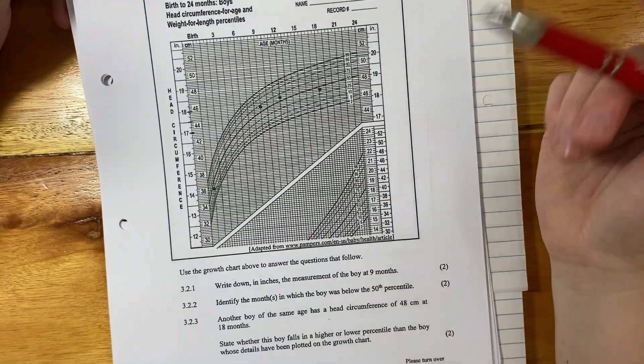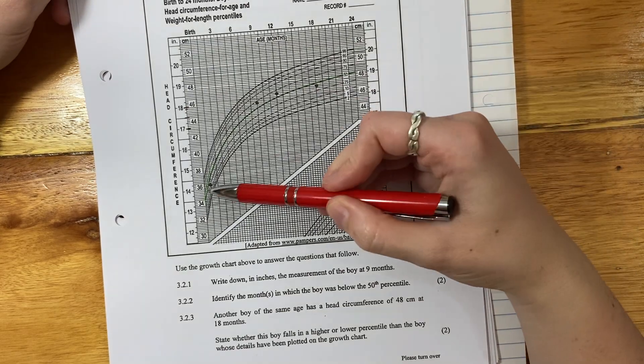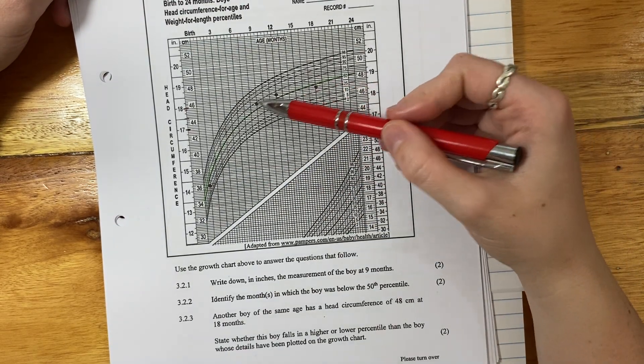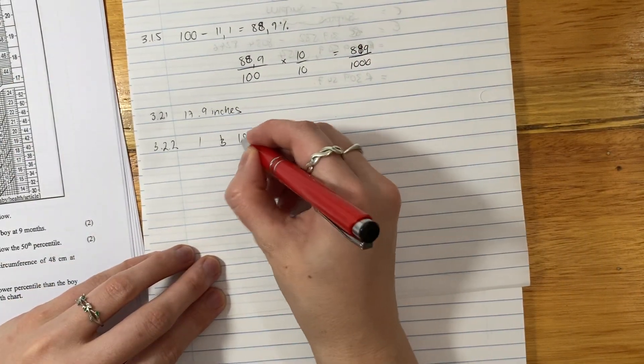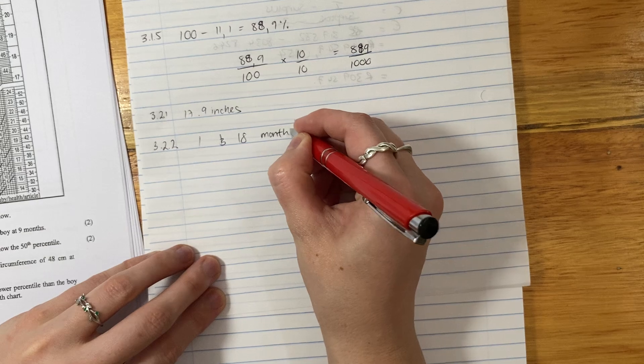When are the dots below the 50th percentile? At one month, it's above there, and at 18 months. It's my answer. One and 18 months.